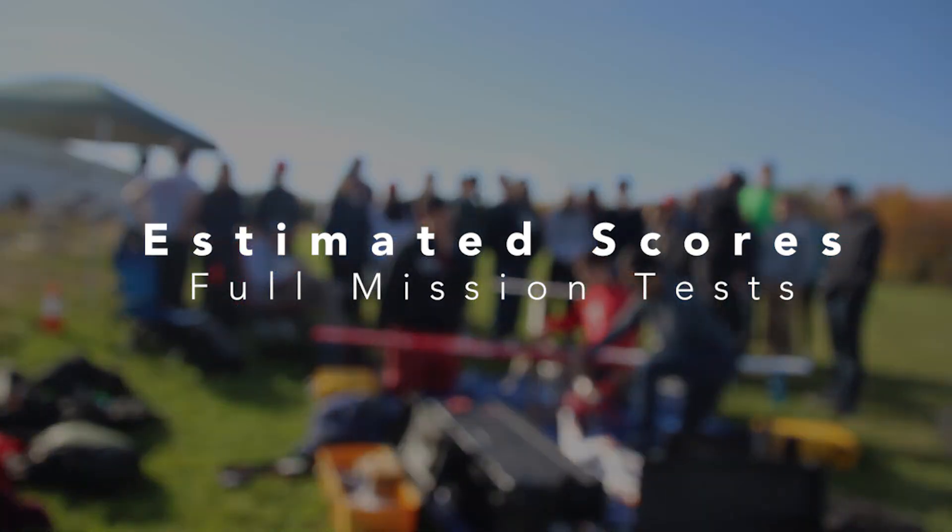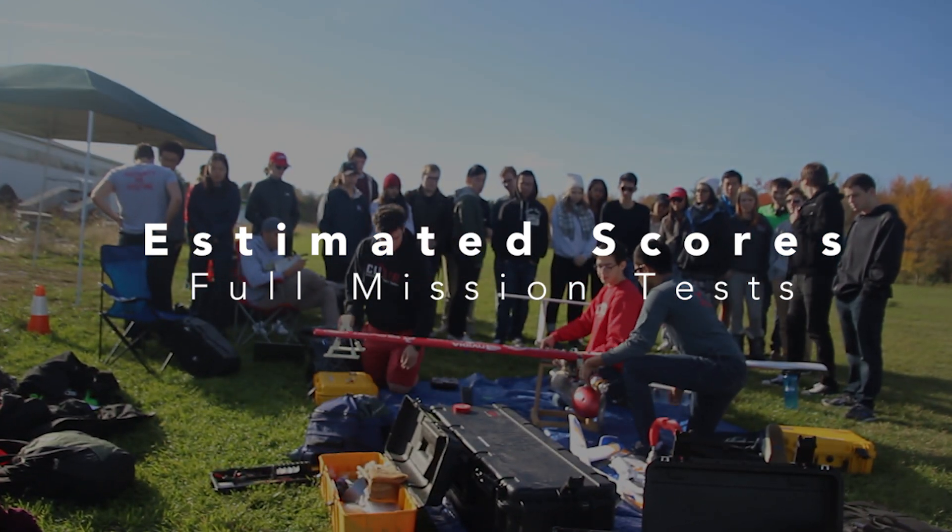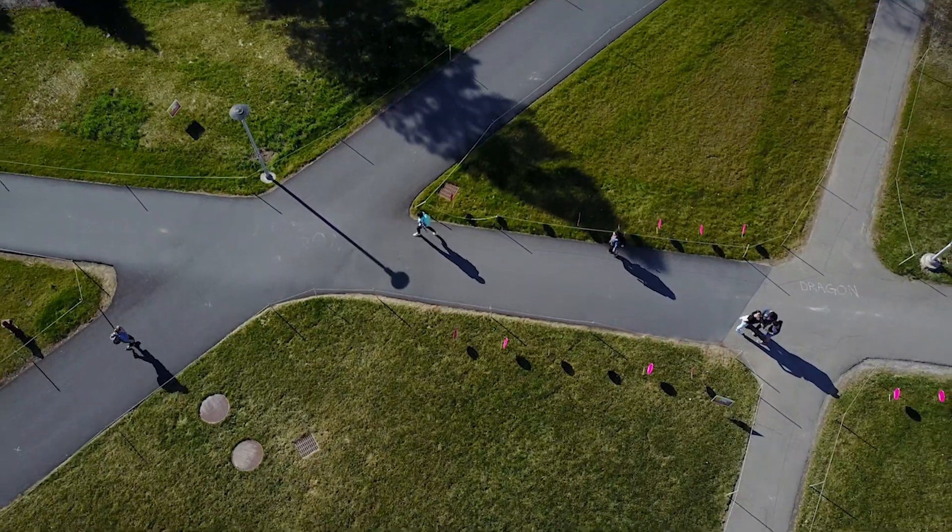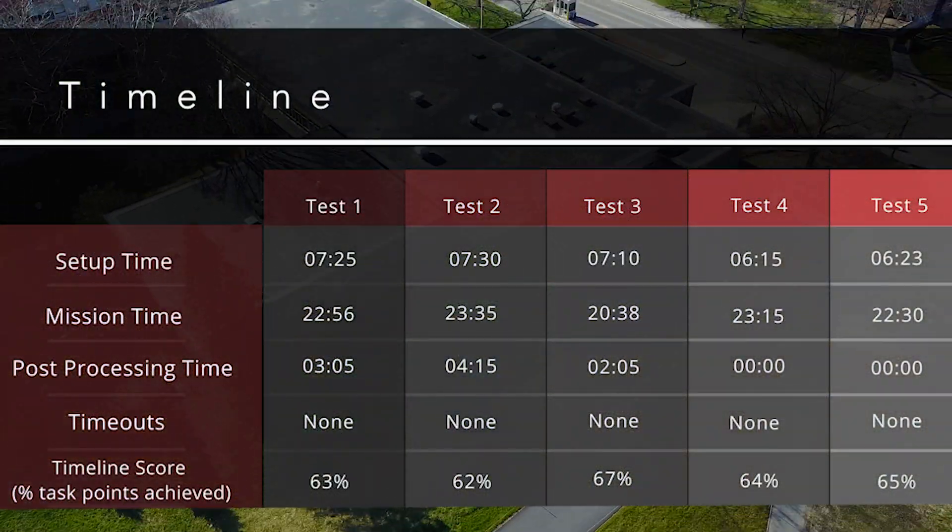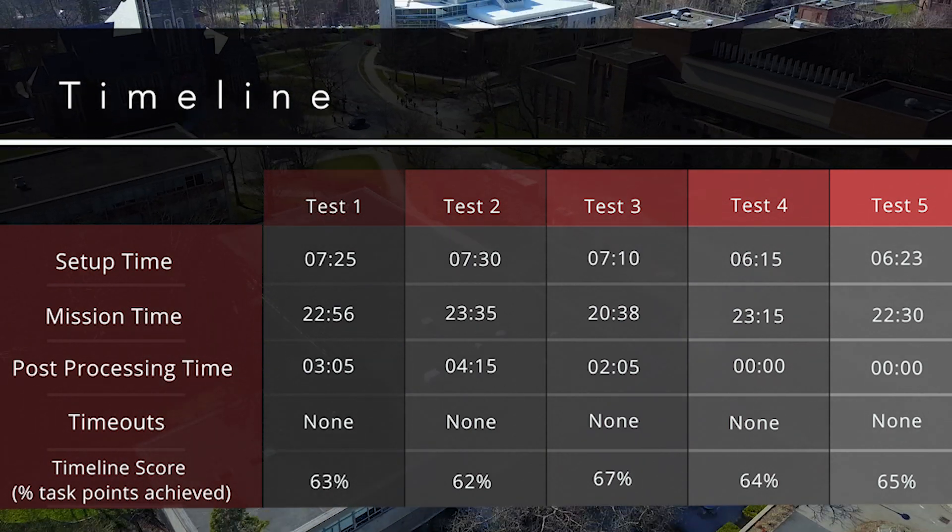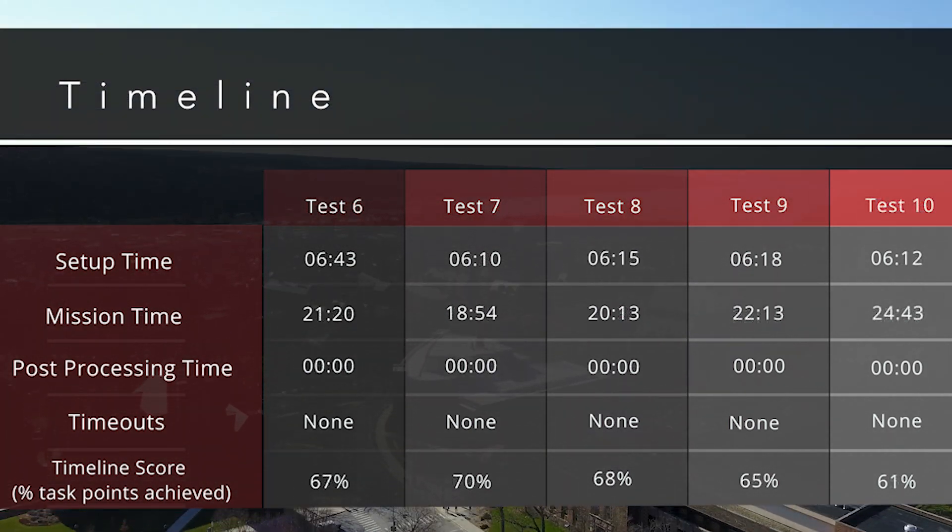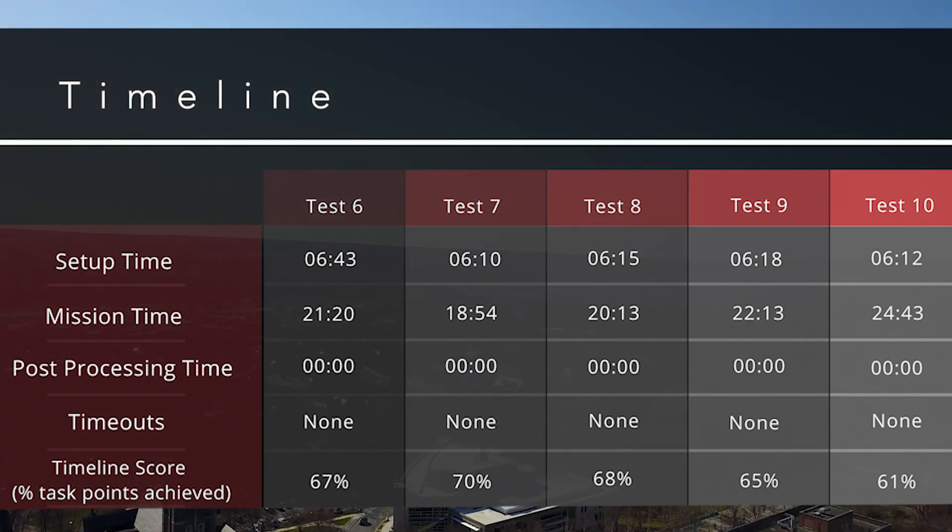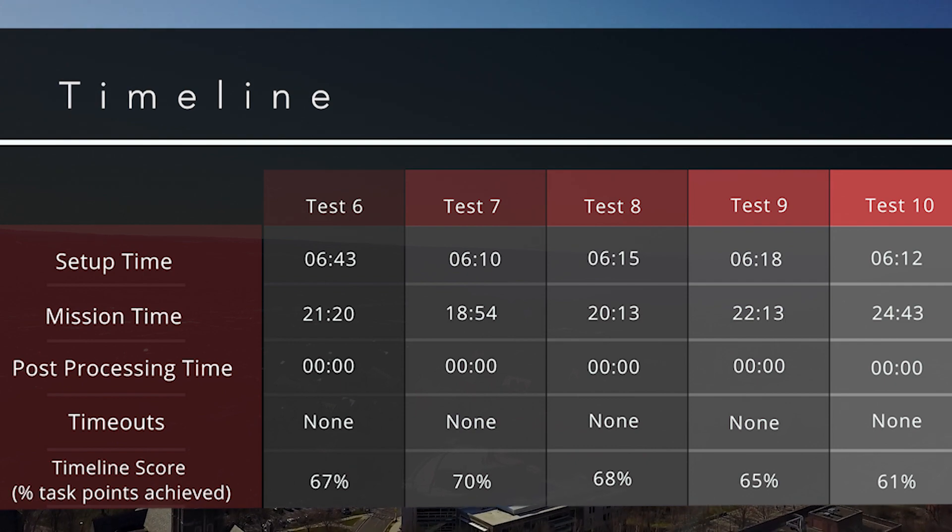CU Air conducted 10 full mission tests. These flights were graded against the rubric provided in the mission demonstration portion of the rules to assess the team's performance. For the timeline task, the team scored an average of 65% of points, taking on average 6 minutes and 40 seconds to set up, 22 minutes of mission time, 1 minute of post-processing time, and no timeouts. The team expects a slightly longer mission time at competition due to the larger search area, but does not expect to require post-processing time due to improved personnel training.